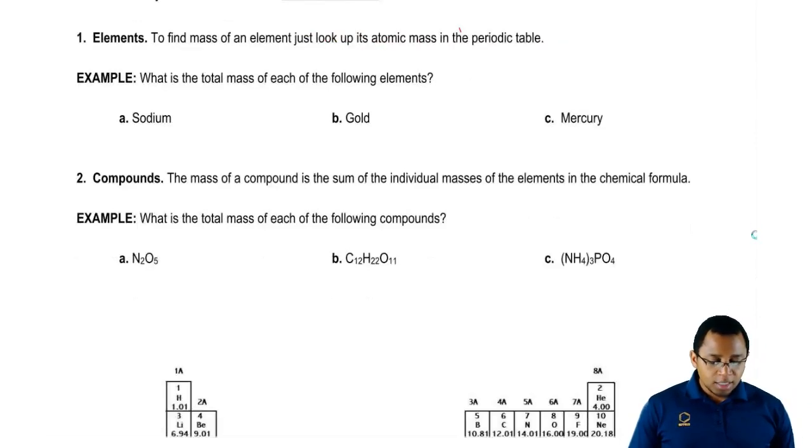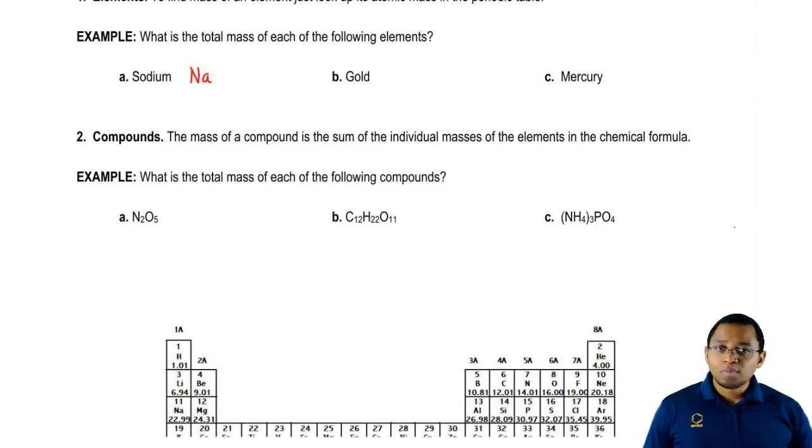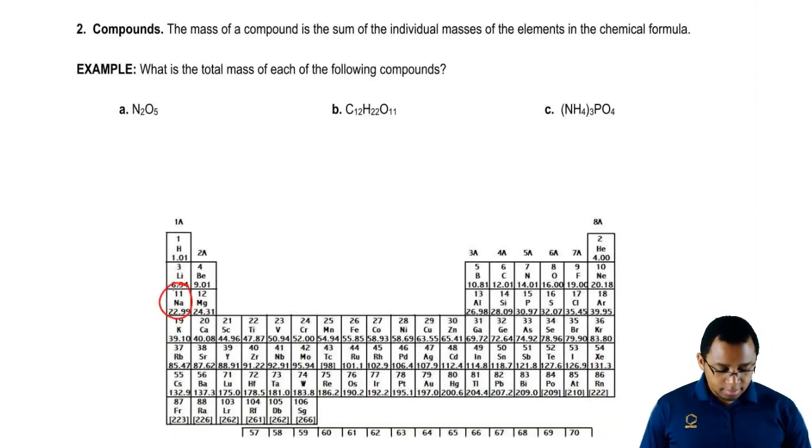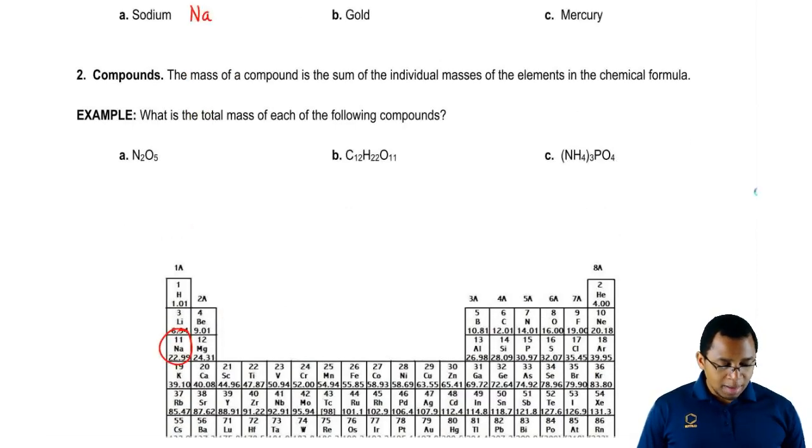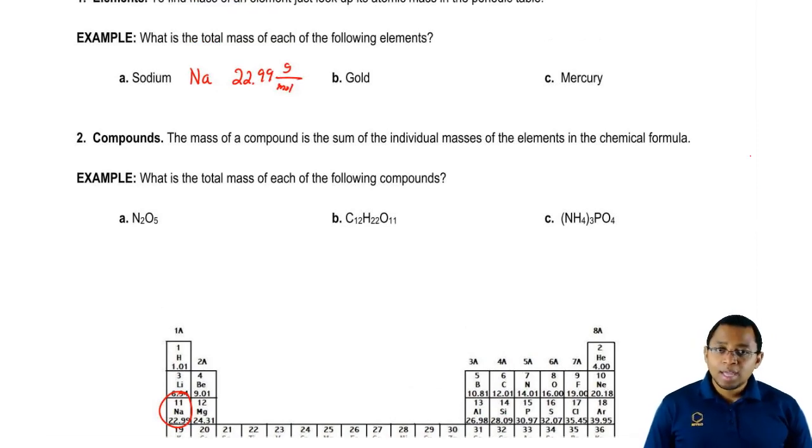What is the total mass of each of the following elements? Sodium is Na. We look on the periodic table, Na is in group 1A. It's right here and its atomic mass is 22.99 grams per mole. So for every 1 mole of sodium, there is 22.99 grams of sodium.